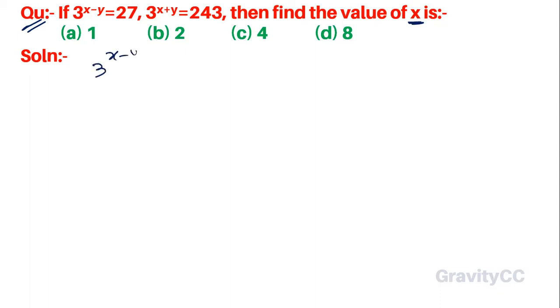Given 3^(x-y) is equal to 27 and 3^(x+y) is equal to 243. So 3^(x-y) equals 27, which is 3 to the power cube, so x minus y is equal to 3.